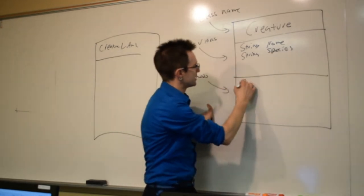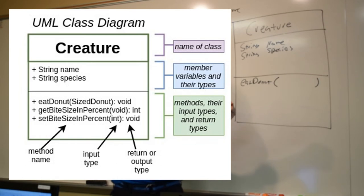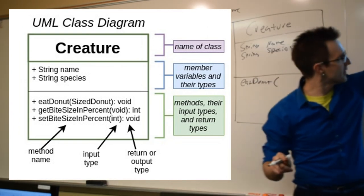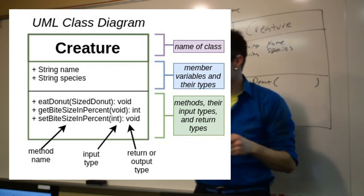So, I have a method eat donut and it takes in what value? If our creature is going to eat a donut, it needs a what? Size. Not quite. It needs an entire what? A donut. A donut. A donut that has a size. So eat donut has an input type of sized donut.